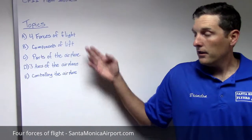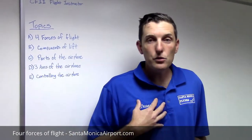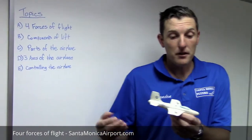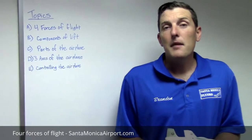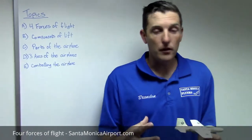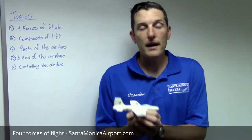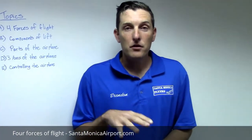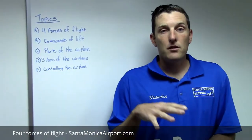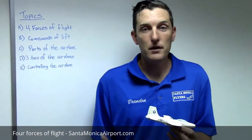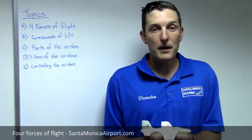The first thing I'd like to talk about is weight. You, me, this little model airplane — which is representative of the plane we fly here at Santa Monica Flyers — is a Sport Cruiser. It's 1,320 pounds. That means you, me, the fuel in the airplane, the airplane itself — all together — the maximum gross takeoff weight is 1,320 pounds. So the question is, how do we make that 1,320 pounds fly? We need to create 1,320 pounds of lift. So we've already talked about two of the four forces: the weight of the aircraft and the lift that needs to happen in order to make that aircraft fly.